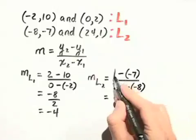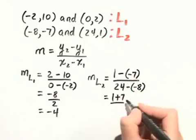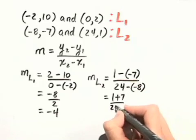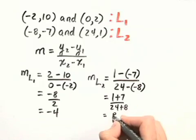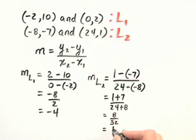So we have 1 minus negative 7, or 1 plus 7, over 24 minus negative 8, or 24 plus 8. That's 8 over 32, which simplifies to 1 fourth.